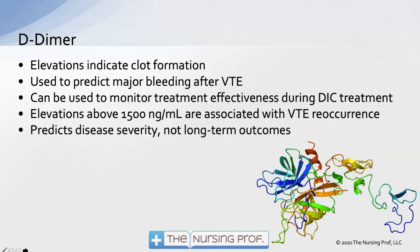D-Dimer can be used to monitor treatment effectiveness during DIC treatment — we'd expect to see D-Dimer start to decrease as treatment becomes more effective. Elevations above 1500 are associated with reoccurrence of venous thromboemboli. We typically use a cutoff of 1000 to indicate certain problems, but 1500 indicates a really high D-Dimer suggesting venous thromboembolism may be reoccurring. It predicts disease severity, though it's not very helpful for long-term outcomes.